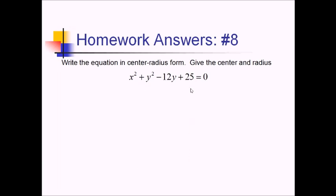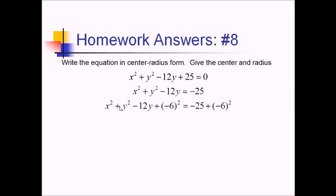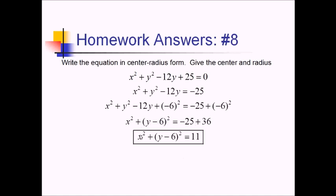For number 8, we need to write this equation in center-radius form and give the center and radius, so we're going to complete the square. First, subtract 25 to the other side. The y's are already together. For x², no special action is needed, but we do need to complete the square for y. Half of −12 is −6, so we add (−6)² = 36 to both sides, giving x² + (y − 6)² = −25 + 36 = 11. The center is (0, 6) and the radius is √11.